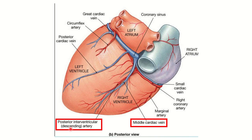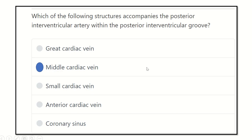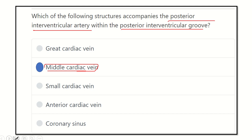In the posterior interventricular groove, alongside the posterior interventricular artery, there is the middle cardiac vein. We can also see other structures such as the posterior cardiac vein, the great cardiac vein, and other branches. So our answer is the middle cardiac vein, which is present in the posterior interventricular groove with the posterior interventricular artery.